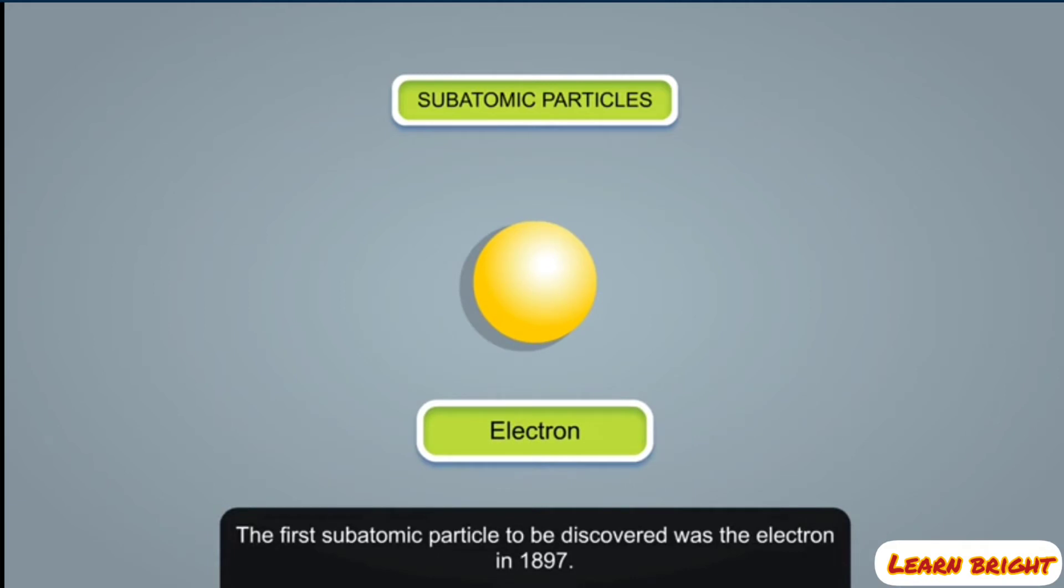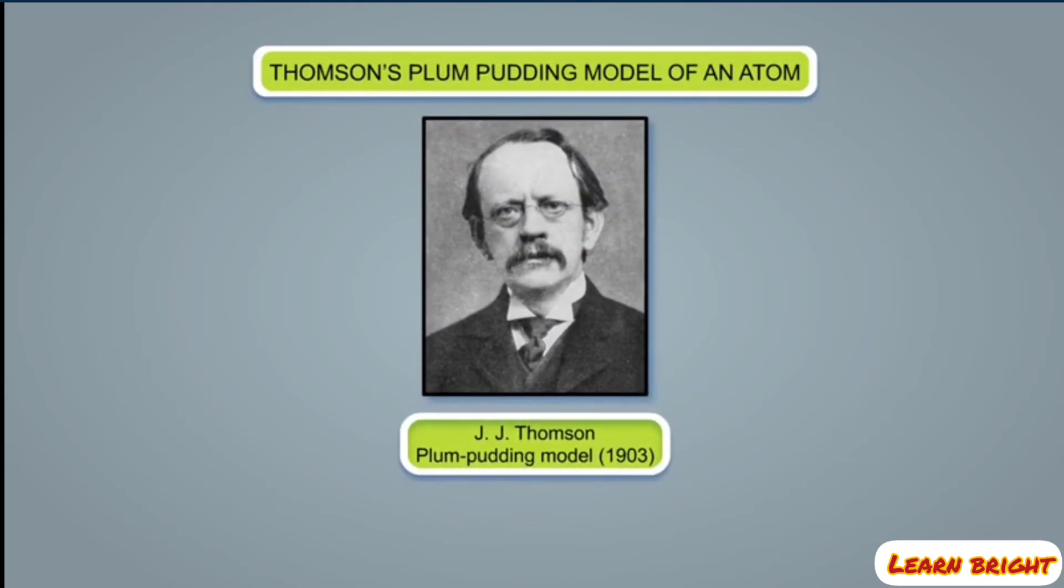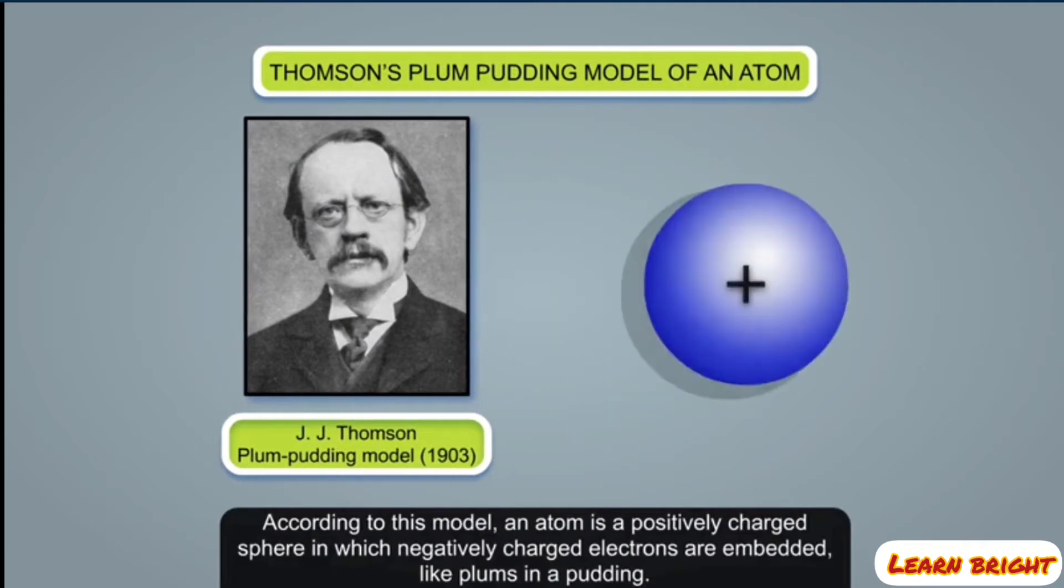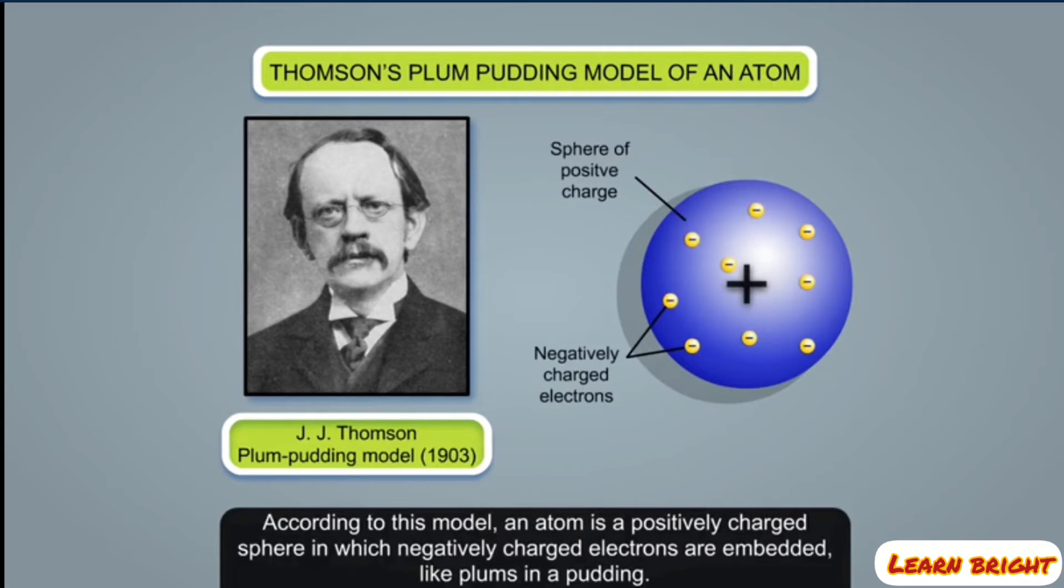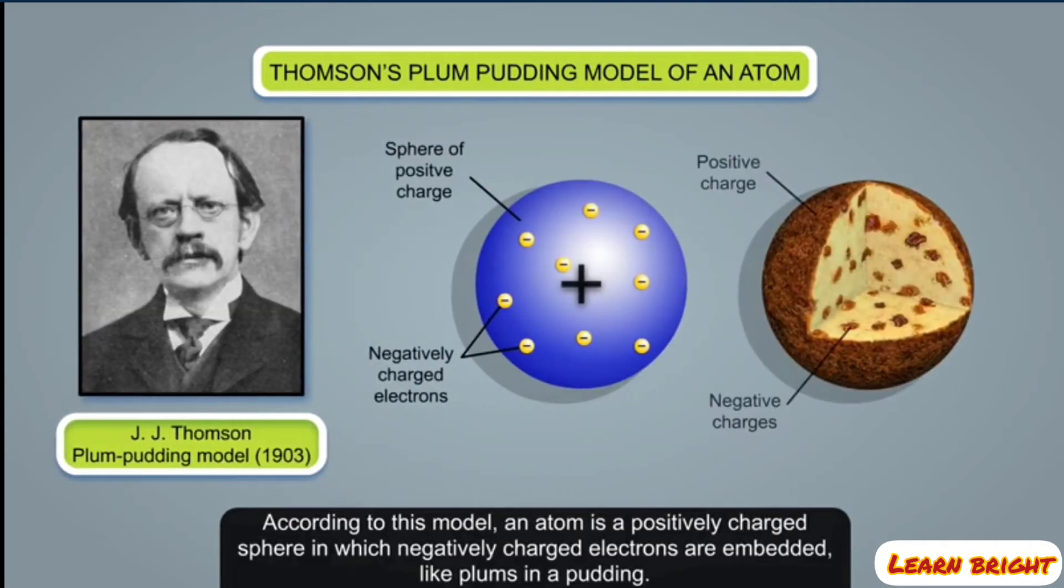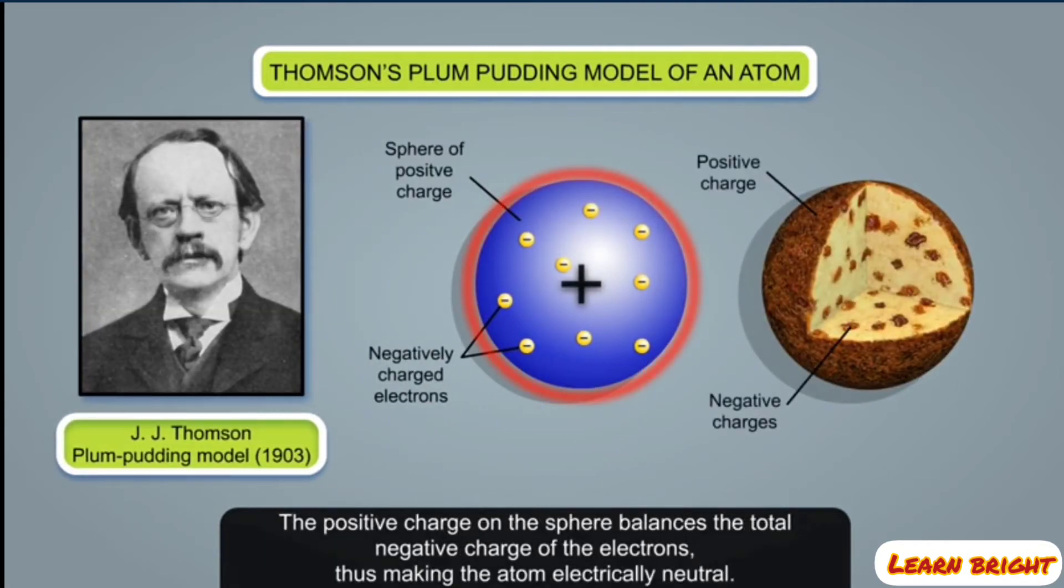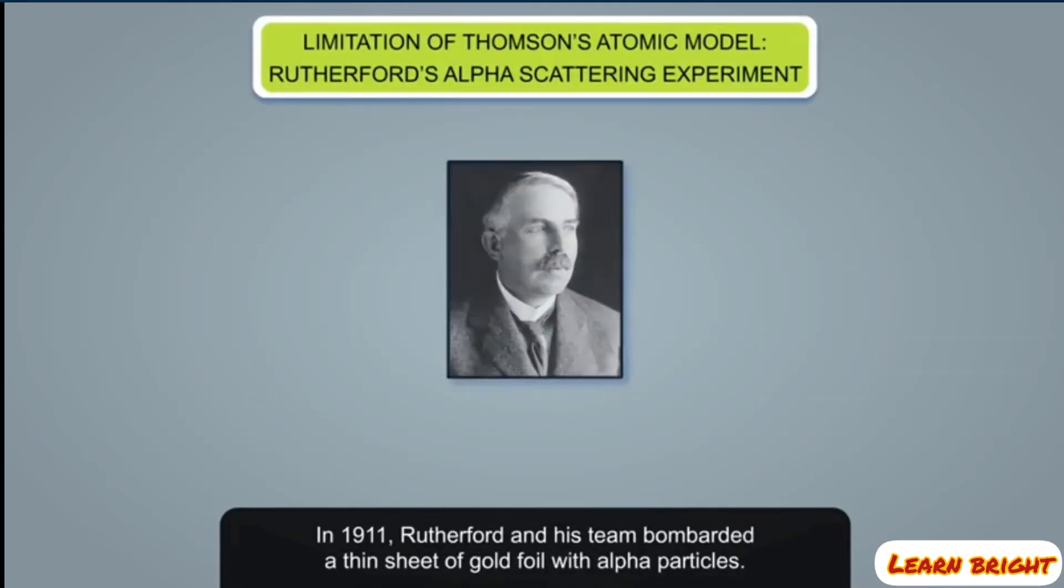In 1897, subsequently in 1903, J.J. Thomson proposed the plum pudding model of the atom. According to this model, an atom is a positively charged sphere in which negatively charged electrons are embedded like plums in a pudding. The positive charge on the sphere balances the total negative charge of the electrons, thus making the atom electrically neutral.